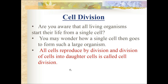Next we have cell division. All living organisms start their life from a single cell. A single cell goes on to form a large organism - when a child is born it is small but within months the body enlarges. All cells reproduce by division, and the division of cells into daughter cells is called cell division.